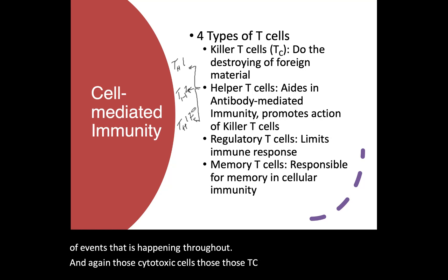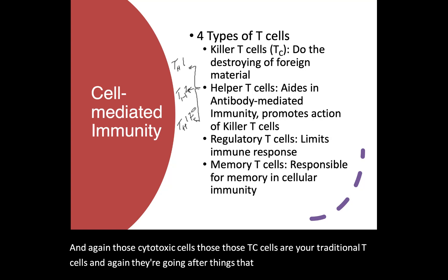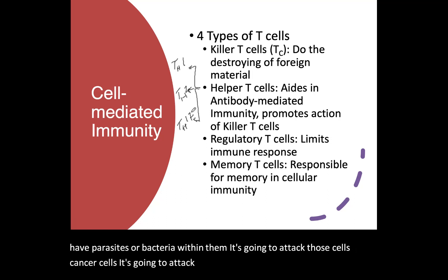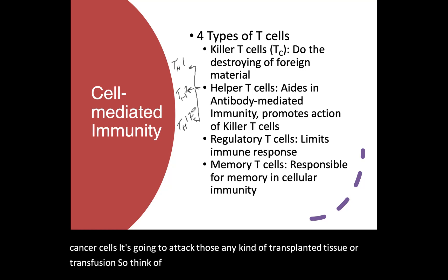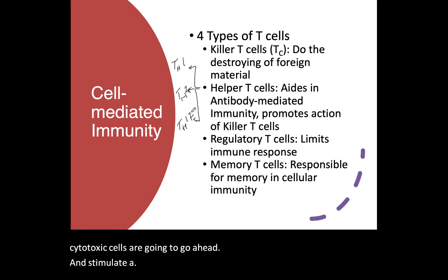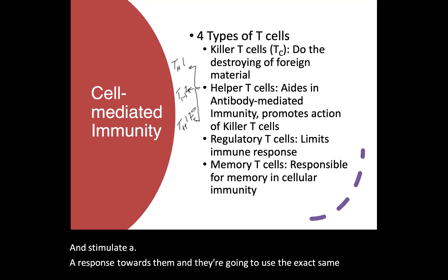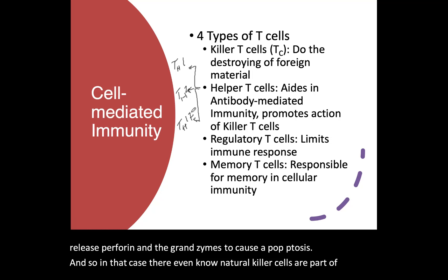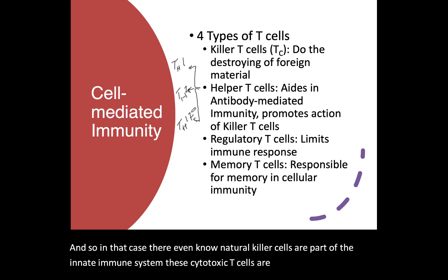Cytotoxic T cells (Tc cells) are your traditional T cells going after virally infected cells, cells that have parasites or bacteria within them, cancer cells, and any transplanted tissue or transfusion — think ABO blood groups and Rh groups. They use the same mechanisms as natural killer cells: releasing perforin and granzymes to cause apoptosis. Unlike natural killer cells which are part of the innate immune system, cytotoxic T cells are very specific, targeting particular cells.